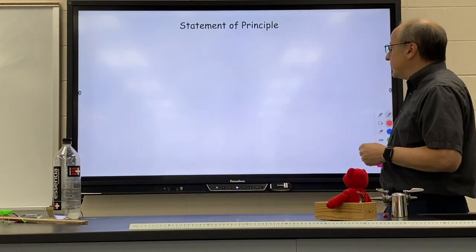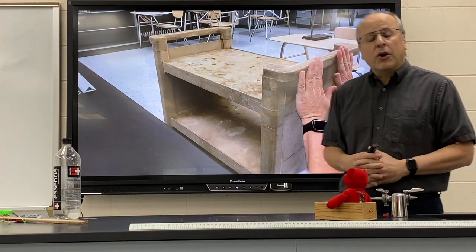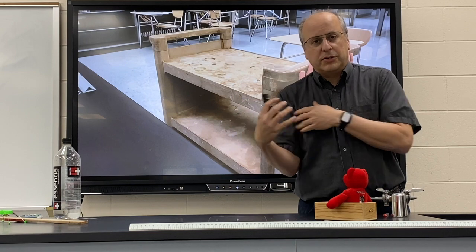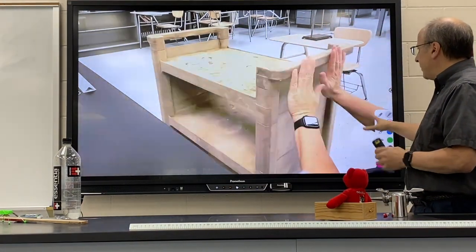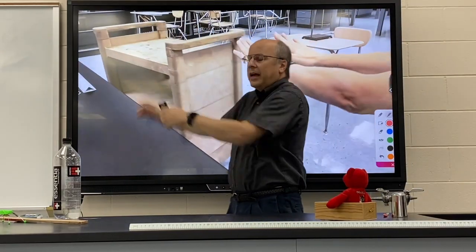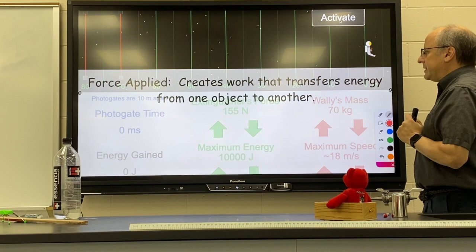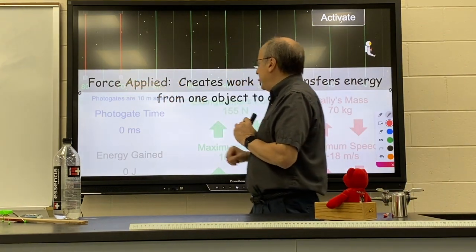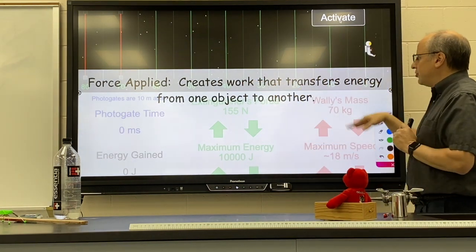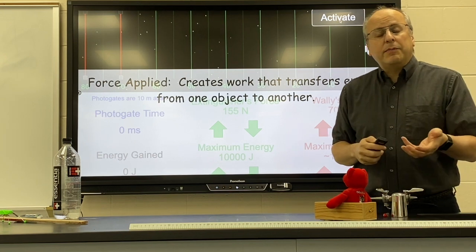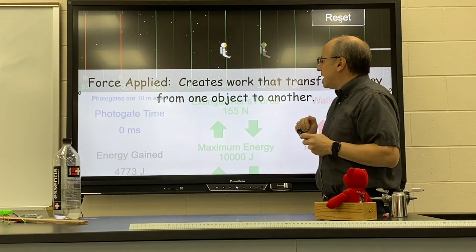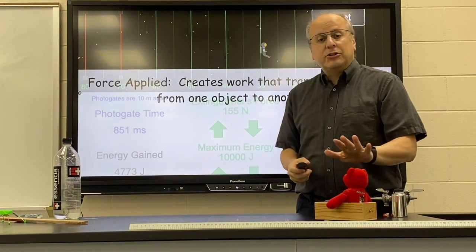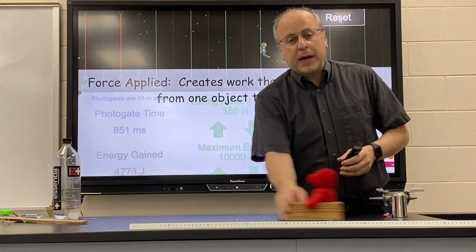Let's look at some examples. First, I have a little chemical cart, and I'd like to transfer energy from my muscles into the cart. I'm going to do so with an applied force — this is what we call work. The energy gets transferred from me into the cart. Here's another example: you use a force applied to create work that transfers energy from one object to another. This time the force will be from a fire extinguisher, and just like before, the work done by that force is going to give kinetic energy to the rider. So energy has been transferred from one object to another by way of a force.